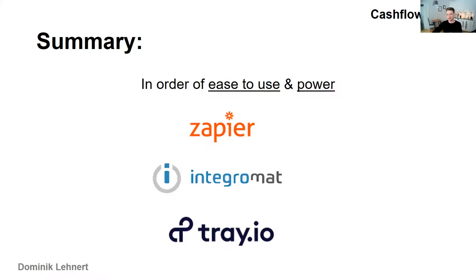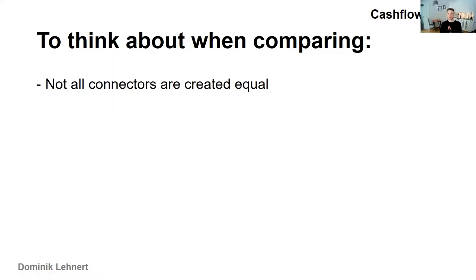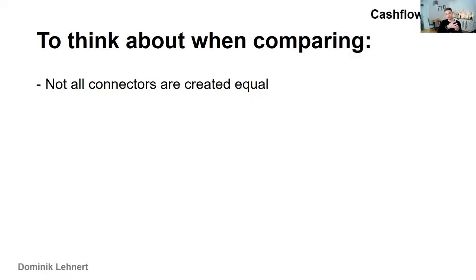Now let's get into the details. Some things to think about when comparing these tools: all of them — Zapier, Integromat, and Tray.io — have a huge list of connectors on their websites. Connectors let you connect to Zoom, Gmail, Google Sheets, Stripe, and more. But not all connectors are created equal. You want to look at what functionality you can actually get out of a connector — for some you can only retrieve information, for others you can send information back and schedule meetings.